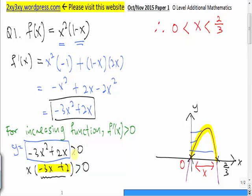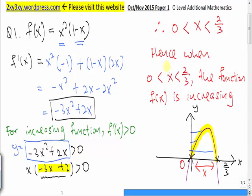There is no equal sign here because there is no equal sign in these inequalities. We conclude our answer. When x is between zero to two-thirds, the function f(x) will be an increasing function.